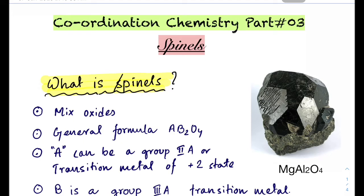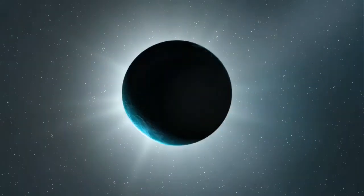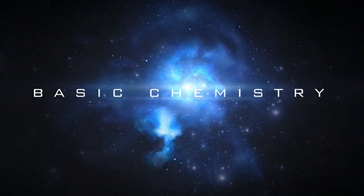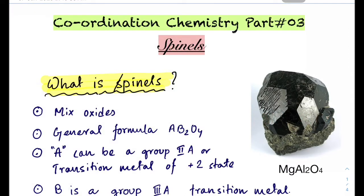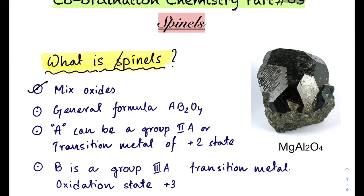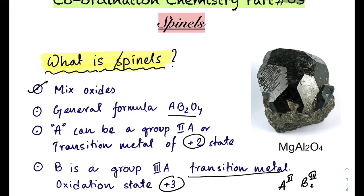Hi, this is Basic Chemistry. Today our new topic is spinels coordination, part 3. Spinels are naturally occurring mixed oxides whose general formula is AB₂O₄, where A belongs to a group 2 element or transition metal with oxidation state +2, and B is a group 3 element or transition metal with oxidation state +3. This is the general formula of spinels.